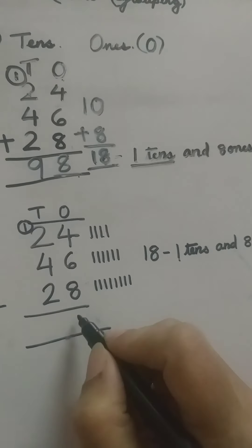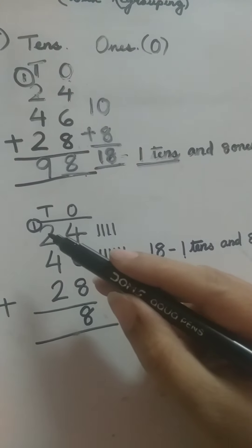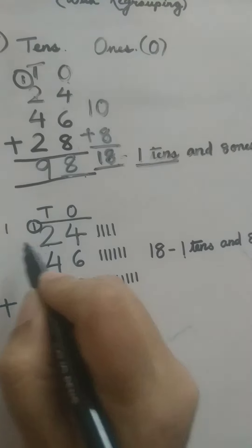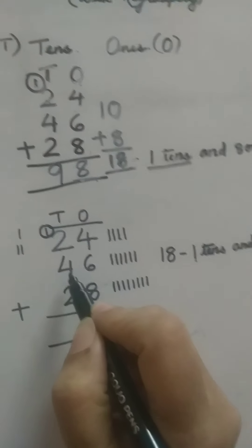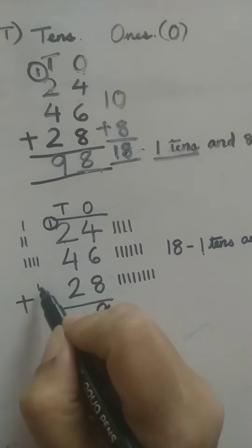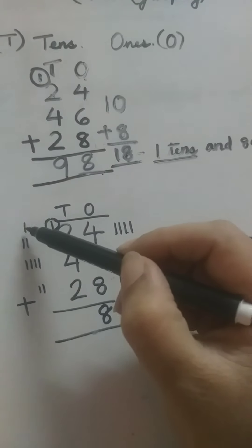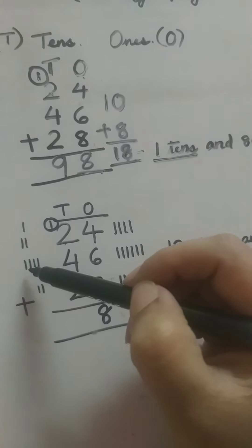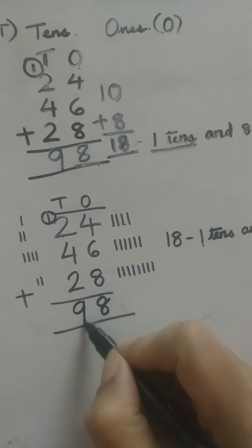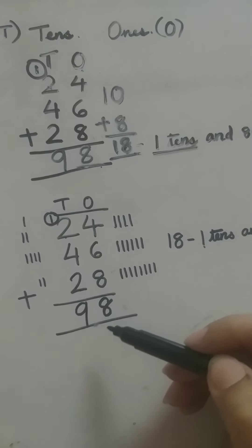So we are going to take this one ten to the tens place, and eight ones to the ones place. Now we have to solve the tens side. We have one carryover, so we draw one line. This is two, so we draw two lines. This is four, so we draw four lines. This is two, so we draw two lines. Now we count all of them together: one, two, three, four, five, six, seven, eight, nine. Our answer is 98. Twenty-four plus forty-six plus twenty-eight is equal to 98.